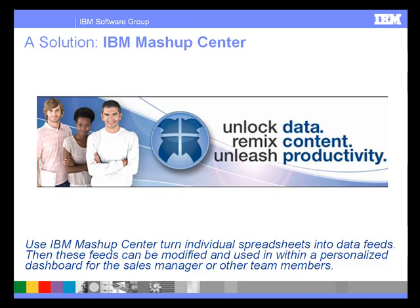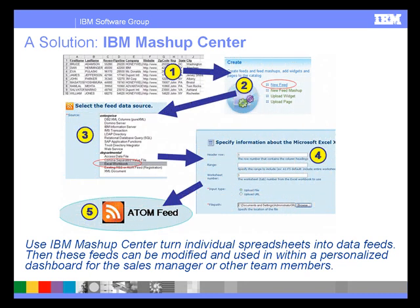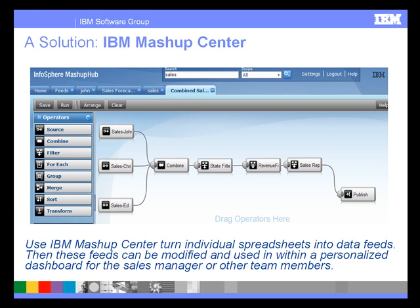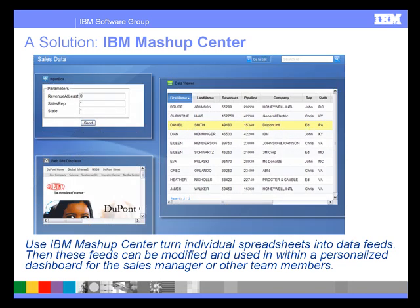One solution is to use IBM Mashup Center. Let me show you a demo which illustrates the key steps: first, turning individual sales data into feeds; then using Mashup Hub to consolidate and filter the information so that unique views of the sales information can be distributed. Finally, I'll show how Jane can create her own personalized dashboard using Lotus Mashups to create unique sales data views.